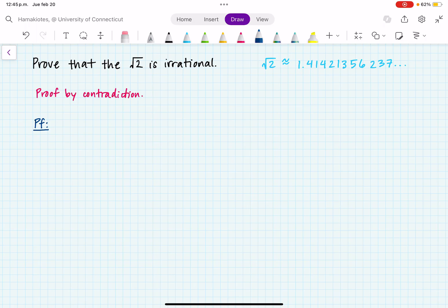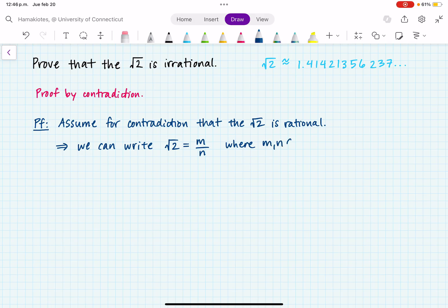Let's assume for contradiction that the square root of 2 is rational. So what does that mean? What do we know about rational numbers? A rational number is any number that we can write as a fraction. So that means that we can write the square root of 2 as some fraction m over n, where m and n are both integers, n is not 0, and we'll say that m over n is in lowest terms.